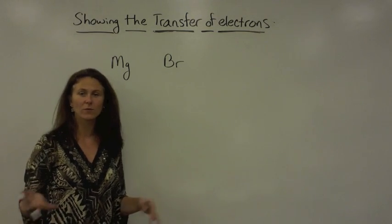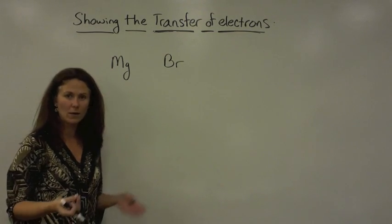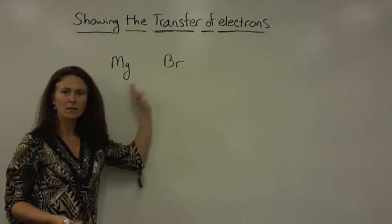Another example of showing the transfer of electrons between, let's say we wanted to form an ion, a compound, between magnesium and bromine.